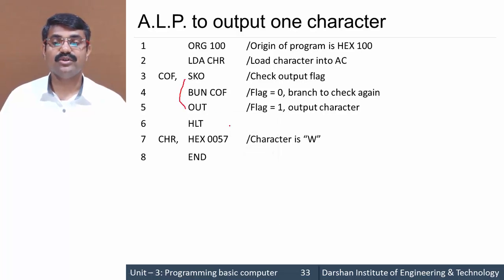But now let us take an example - consider that output flag is 0. So the next instruction won't be skipped off. At that time BUN will be executed, so branch unconditionally to COF.